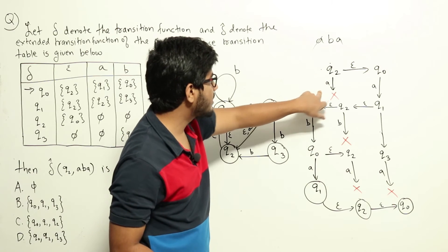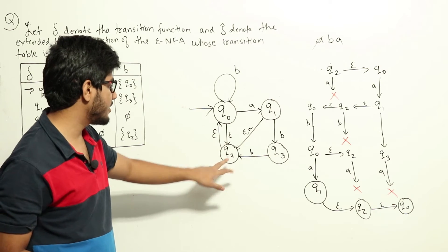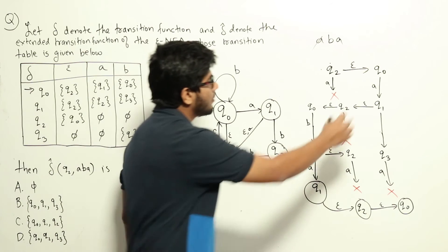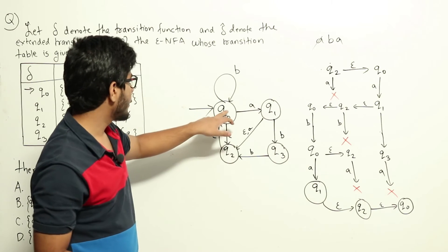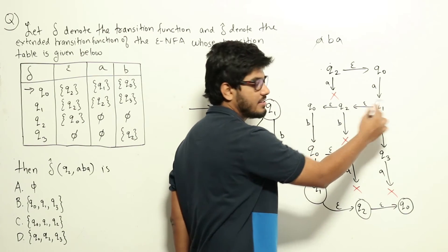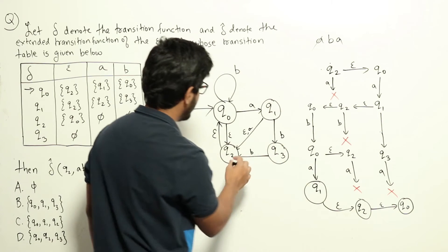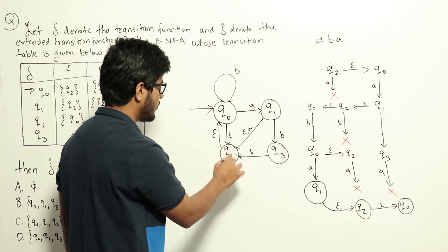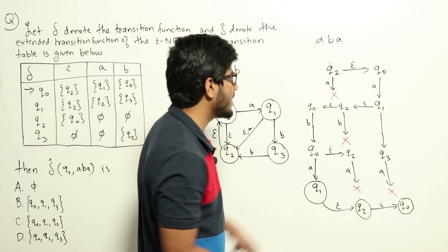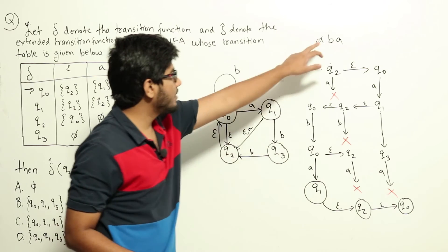On seeing a: from q2 there is no a-transition, so that branch is closed. From q0 on a we go to q1. Now we take epsilon transitions from q1: on epsilon from q1 we go to q2, and from q2 on epsilon we go to q0. There are no further epsilon transitions. So after reading a, we can simultaneously be in states q1, q2, or q0.